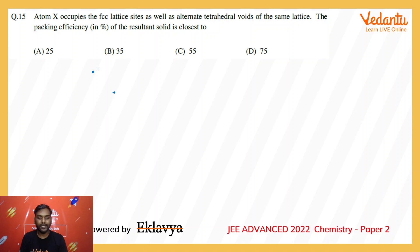...root 3a by 4, as root 3 is the body diagonal. Because both atoms are the same - the atom at the corner and the atom in the tetravoid - this distance would be two times radius. So 2r equals root 3a by 4, which means a equals 8r by root 3.